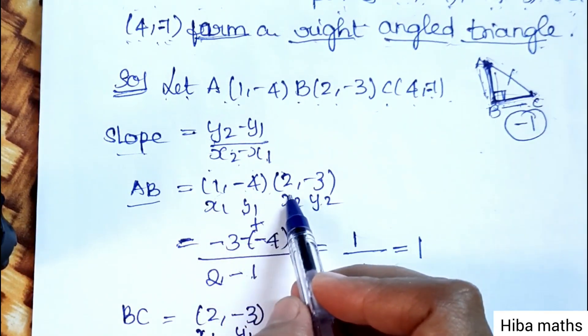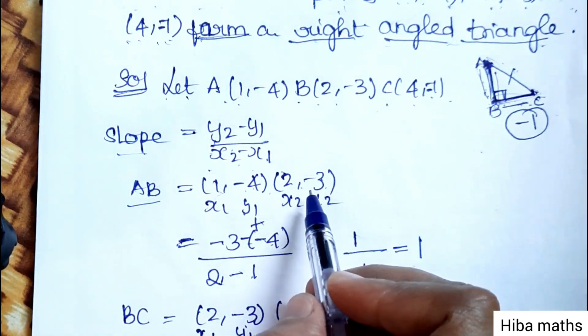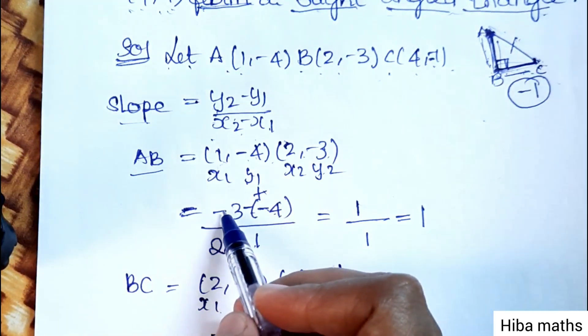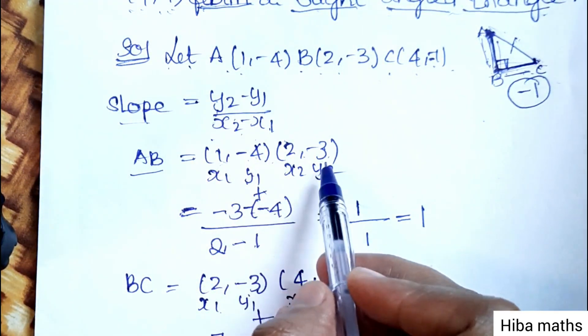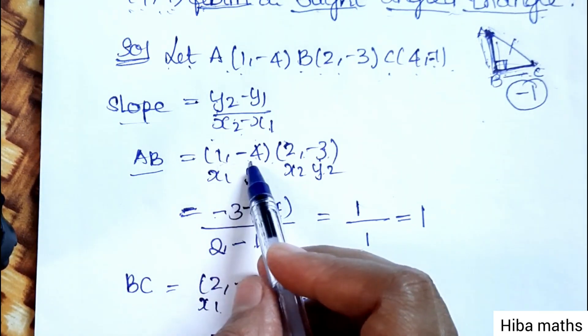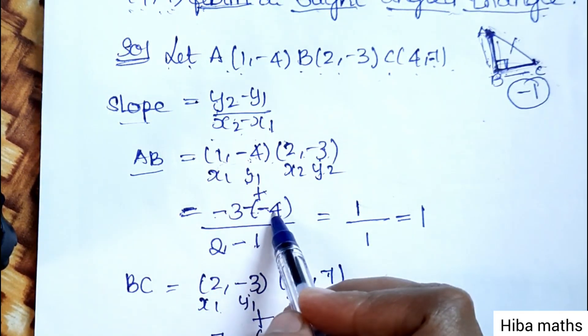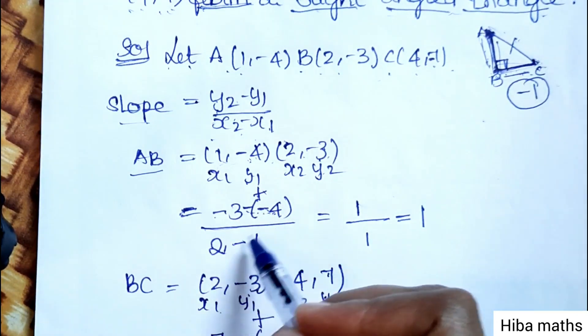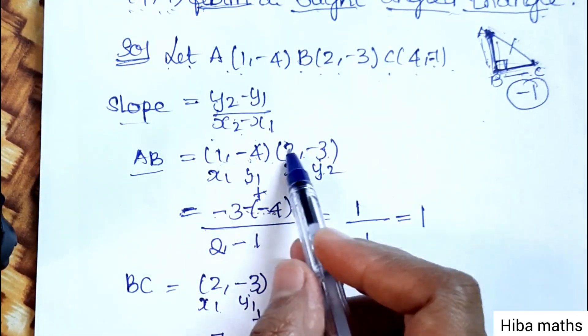A is (1,-4), B is (2,-3). x1, y1, x2, y2. In the formula we will substitute y2 value minus 3, minus y1 value minus 4, so minus minus becomes plus, divided by x2 minus x1.